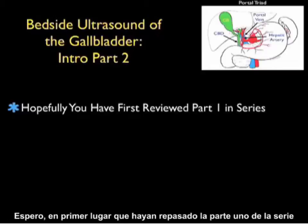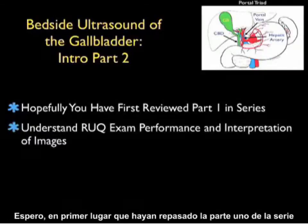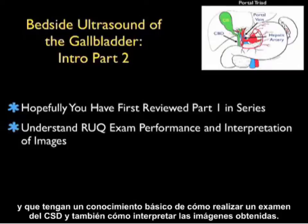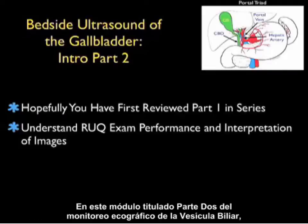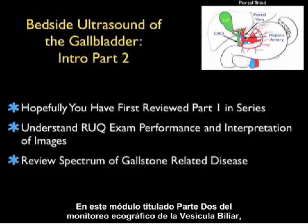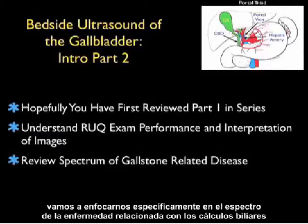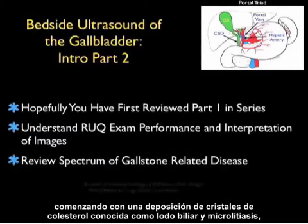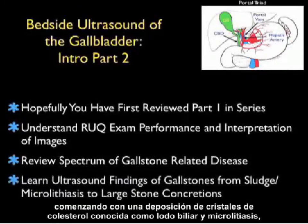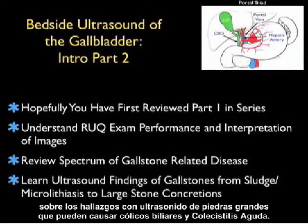Hopefully you've reviewed Part 1 in the series and have a basic understanding of how to perform the right upper quadrant exam and how to interpret the images you will obtain. In this module, Part 2 of Gallbladder Sonography, we're going to focus specifically on the spectrum of gallstone-related disease, beginning with the deposition of cholesterol crystals known as gallbladder sludge and microlithiasis, onto the ultrasound findings with large stone concretions that may cause biliary colic and acute cholecystitis.